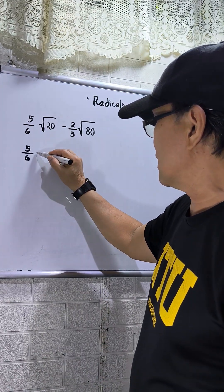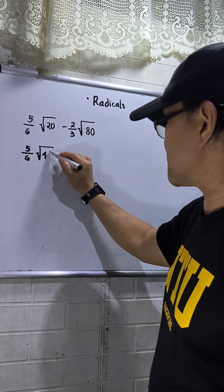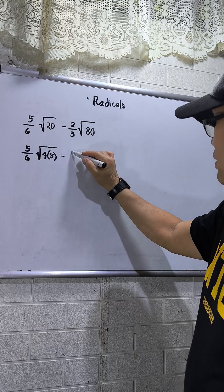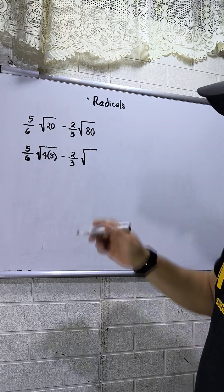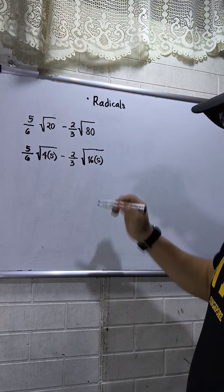This will be 5 over 6, perfect square, so meaning this will be 4 times 5. 4 is perfect square. Then minus 2 over 3, perfect square also for 80, that will be 16 times 5, because 16 times 5 that will be 80.